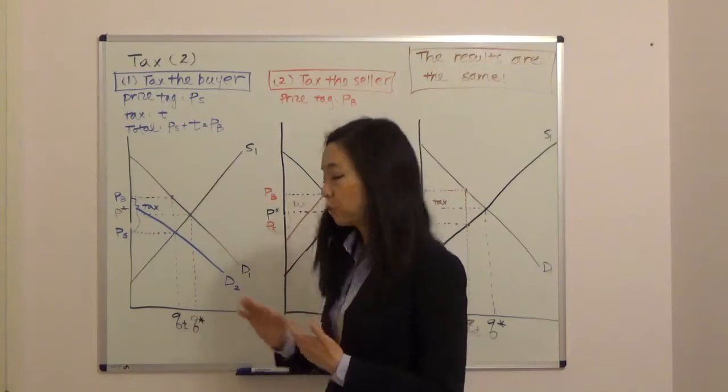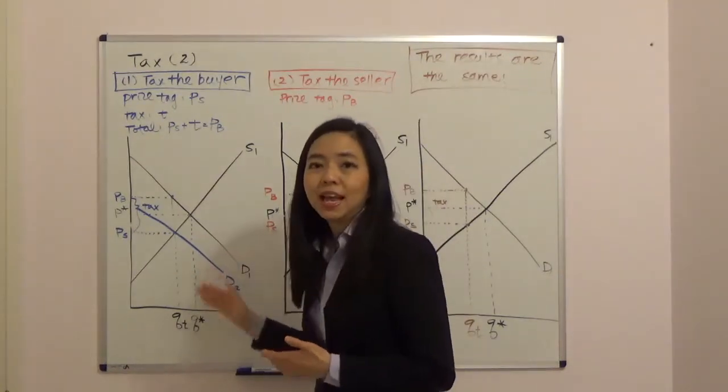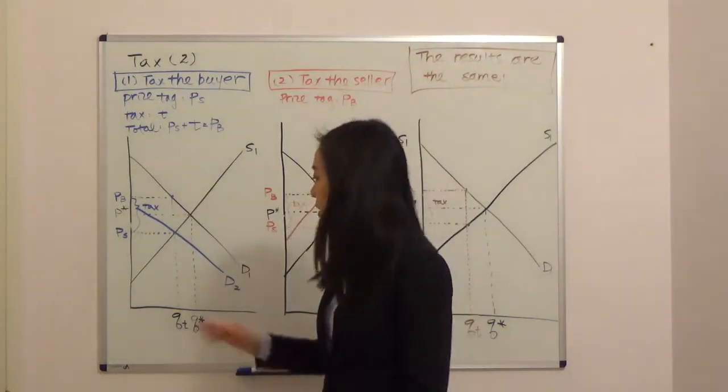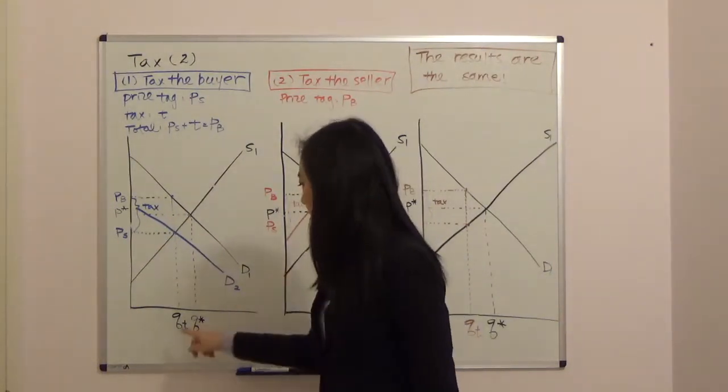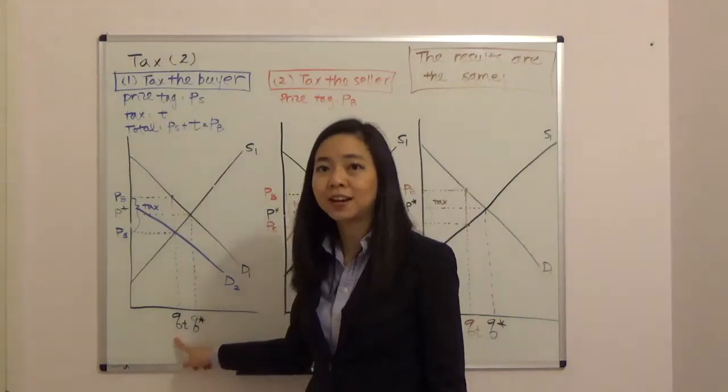So that's going to shift our demand curve from D1 to D2. And now at the new intersection of the demand and supply curve, you see the price is now PS and the equilibrium quantity is QT. T stands for tax.